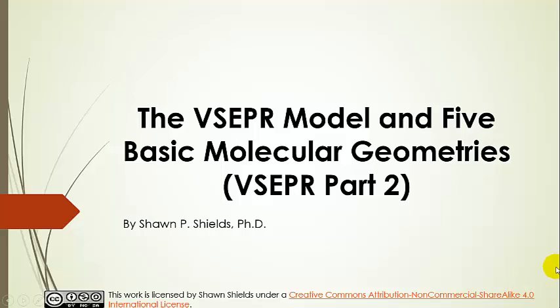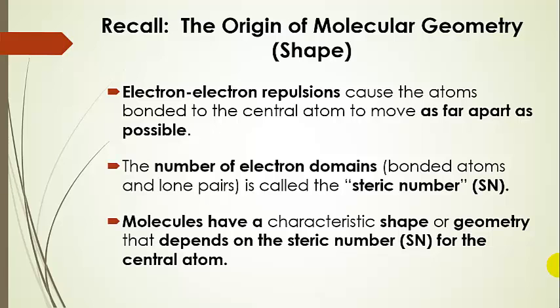The VSEPR model and the five basic molecular geometries. We started talking about the origin of molecular shape, and it comes from electron-electron repulsions that cause the atoms around the central atom to move as far apart as possible.